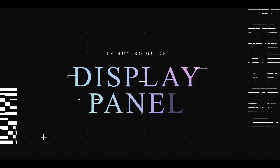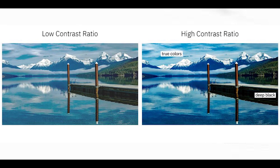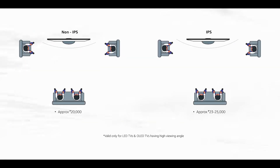Now, let's talk about the display panel. There are two display panels: the VA panel and the IPS panel. The VA panel is a high-contrast display — it provides high-contrast visuals. The IPS panel has wider viewing angles but somewhat lower contrast compared to the VA panel.